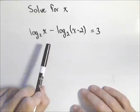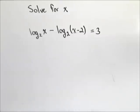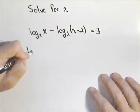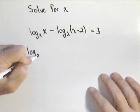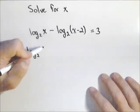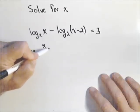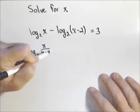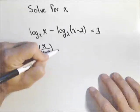Because they're both base two, we can use a property that says if we have the difference of two logs, it can be written as a quotient in a single log. So this can be rewritten as log base two of x over x minus two, and that's equal to three.